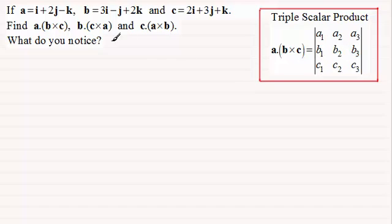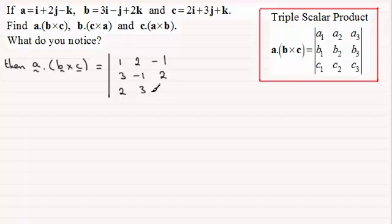So for the first one then where we've got to work out a dotted with b crossed with c, let's just put that down here. We've got to set up then our determinant here. So doing that then what we've got is a1, a2, a3 which will be the components 1, 2 and minus 1. And then we have the components of the vector b which will be 3, minus 1 and 2. And then same for c that will be 2, 3 and 1.